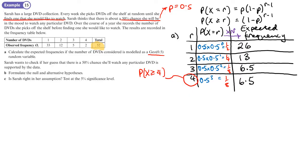So for part A, the expected frequencies are going to be 26, 13, 6.5, and 6.5.